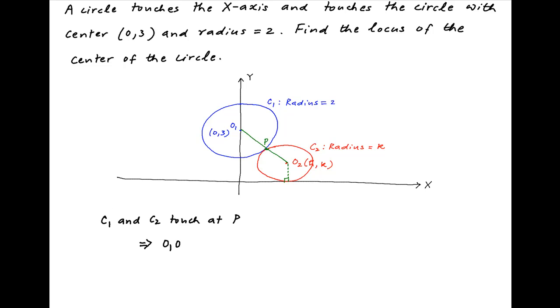the distance between the centers of these two circles, O1 and O2, is equal to the radius of C1 plus the radius of C2.